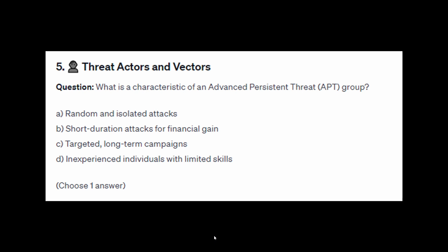For exam question number five: what is a characteristic of an advanced persistent threat (APT) group? Is it A: random and isolated attacks, B: short-duration attacks for financial gain, C: targeted long-term campaigns, or D: inexperienced individuals with limited skills?